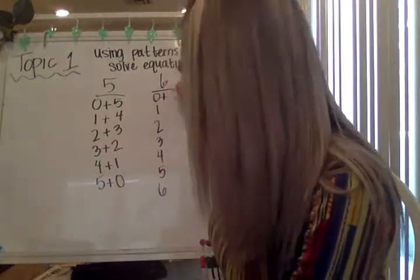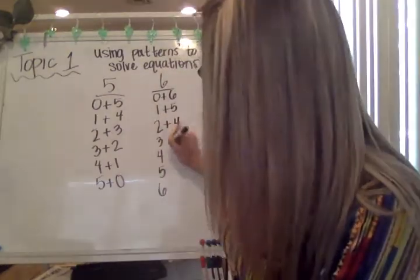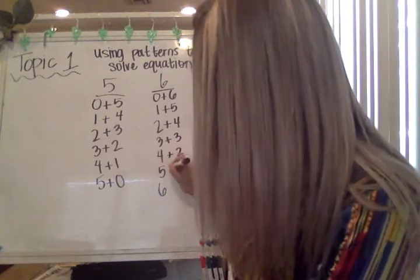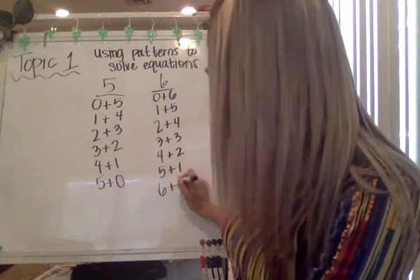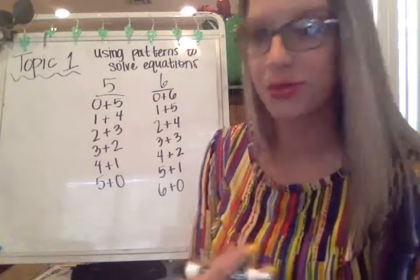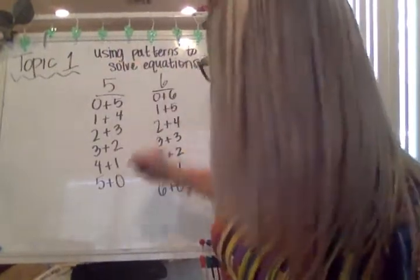Okay? So zero plus six, one plus five, two plus four, three plus three, four plus two, five plus one, and six plus zero. This makes sure that I don't forget any of those partner pairs. So paying attention to that and using the pattern to solve.